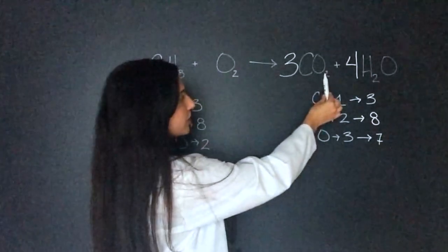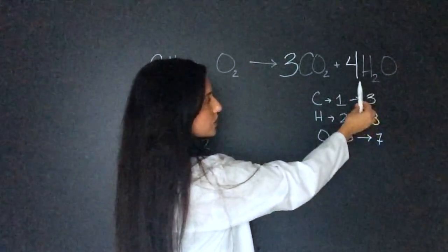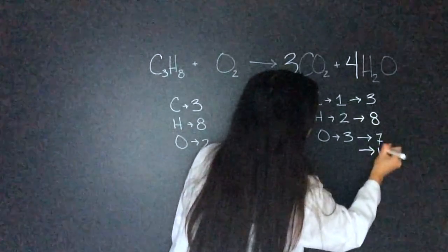And then now we have two times four is eight, but then this also changed the oxygen. So now we have the three times two is six plus four times one. So four, so six, seven, eight, nine, ten. So instead of seven, we have ten.